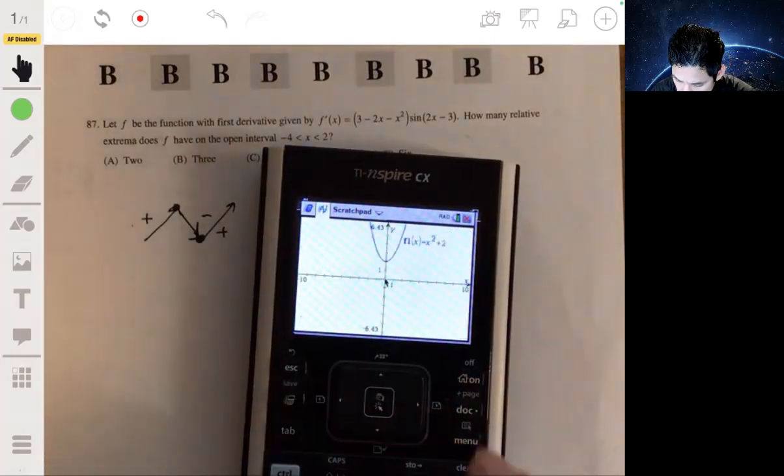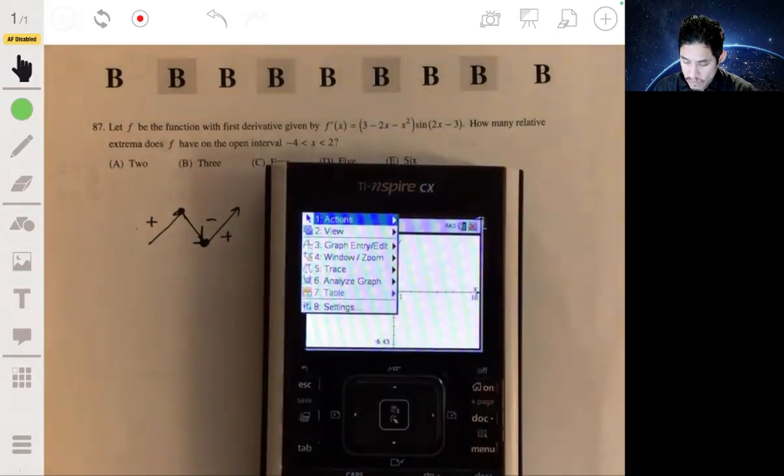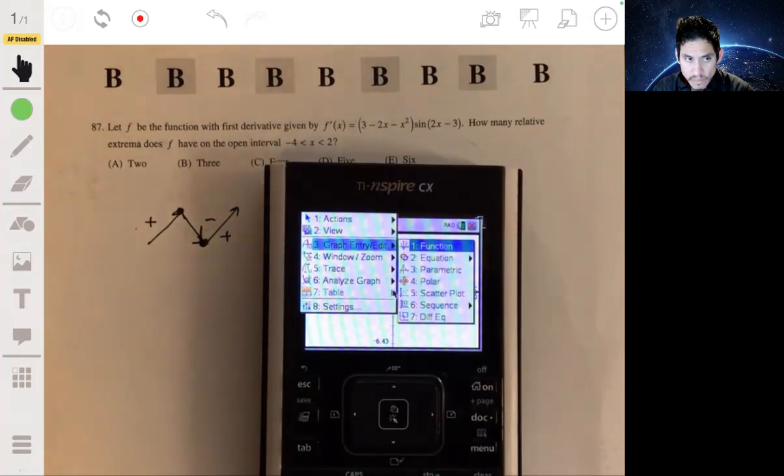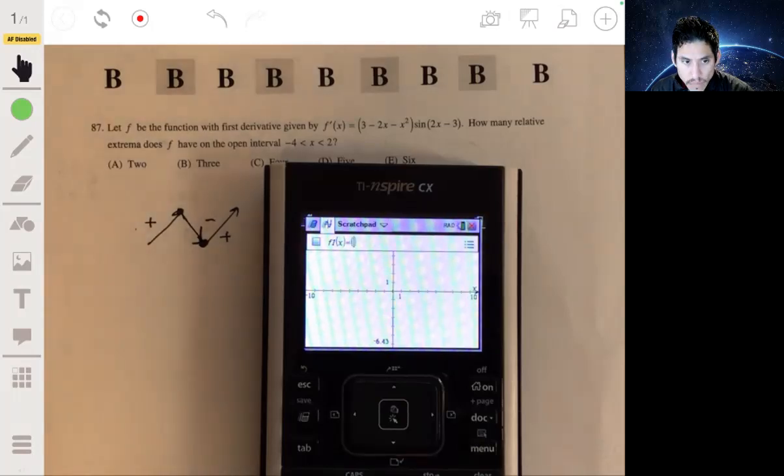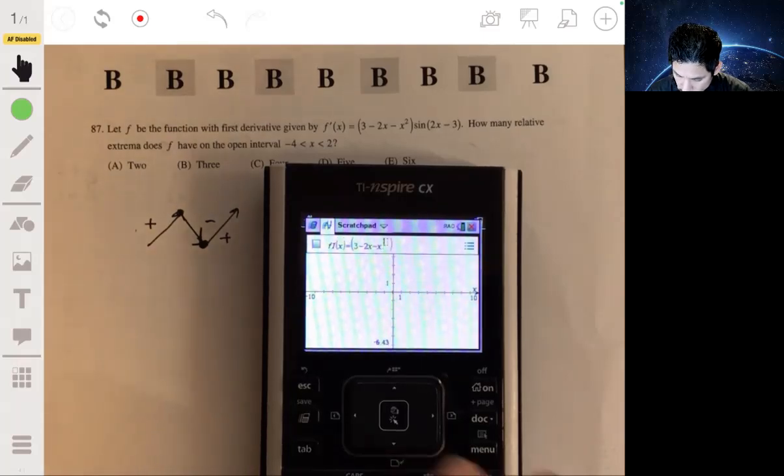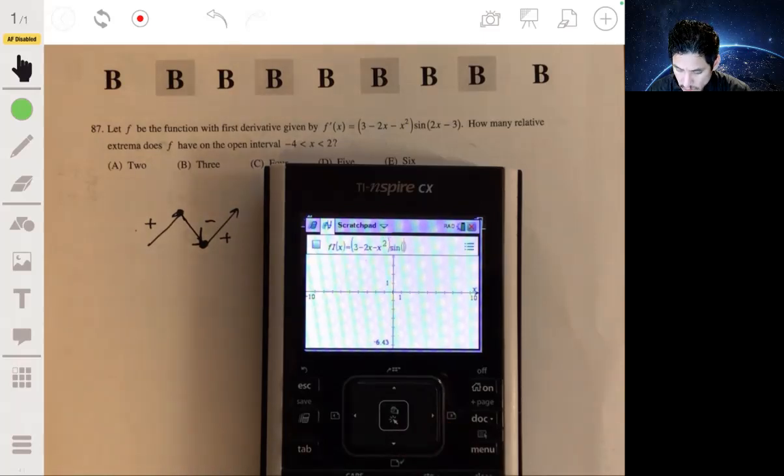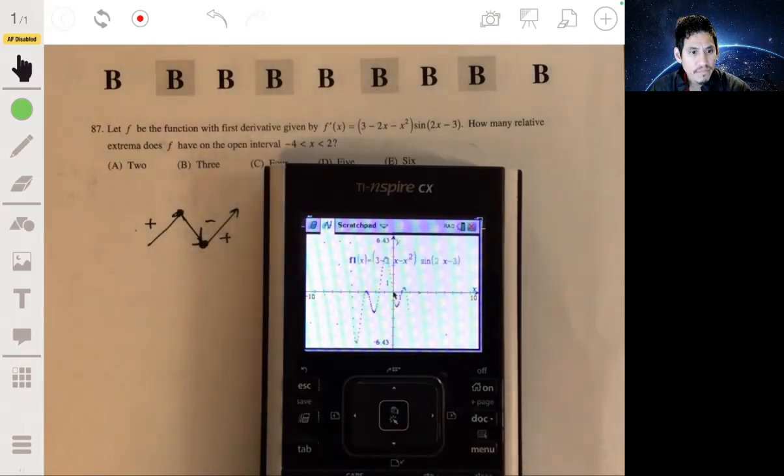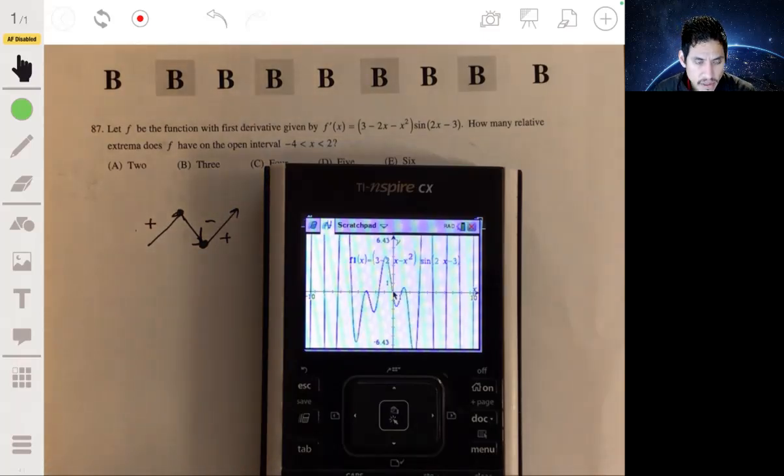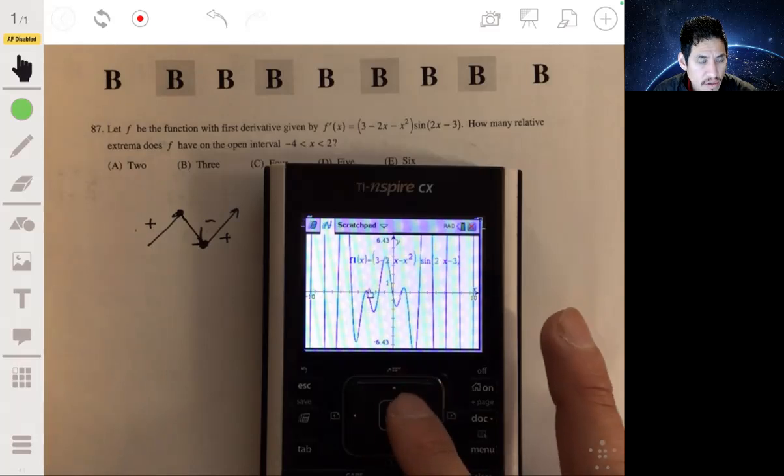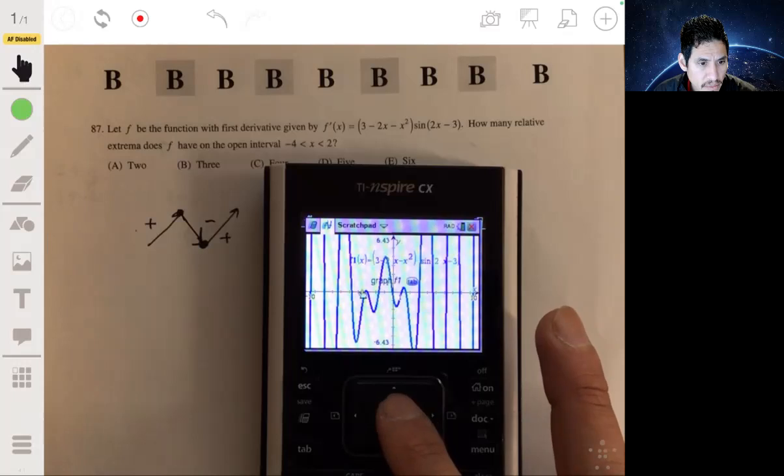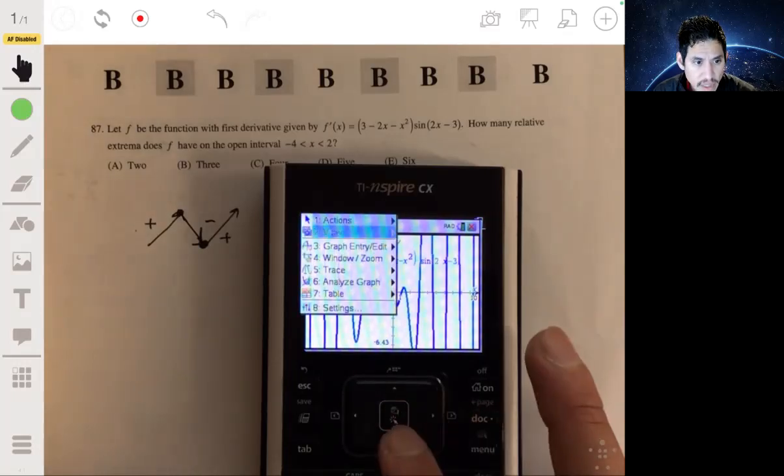So let's get 3 minus 2x minus x squared, times sine of 2x minus 3. And we got a crazy graph going on here. It looks like we got something going on here. Let's see, that barely goes up. I'm going in from negative 4, so let's zoom in, analyze this better.